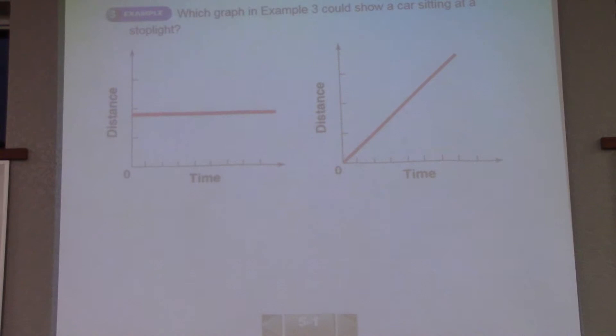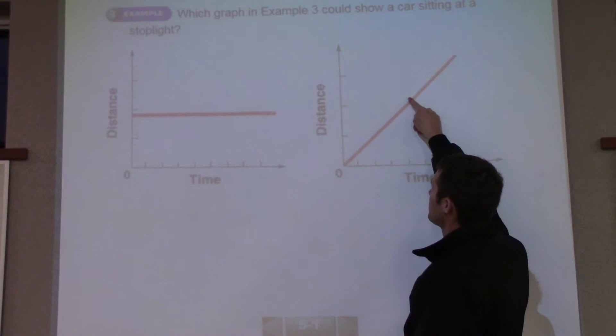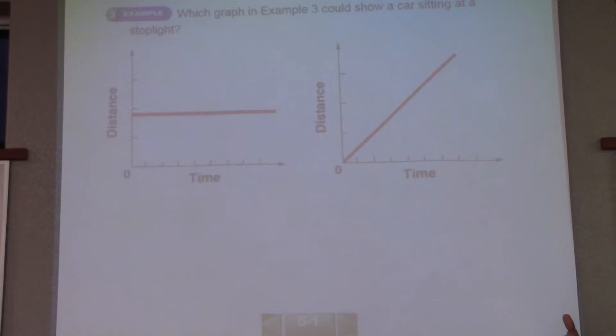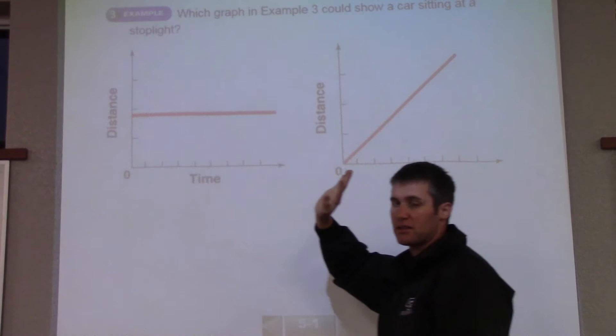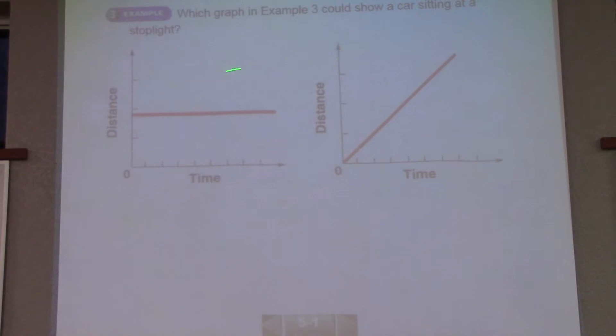Next one. Which graph shows a car sitting at a stoplight? So if we're talking about distance, we could be talking about the distance from home or whatever it may be. So if you look at this, this distance, what's happening to the distance as it goes? It's getting more and more and more. So if a car's sitting, would the car gain distance more and more away from home as you're sitting at a stoplight? Or would it be like this, where this just shows a steady line? It's not gaining distance. It's not losing distance. It's just staying steady. So in this case, this graph right here shows a car sitting at a stoplight. It's just at the same distance. It's not moving.